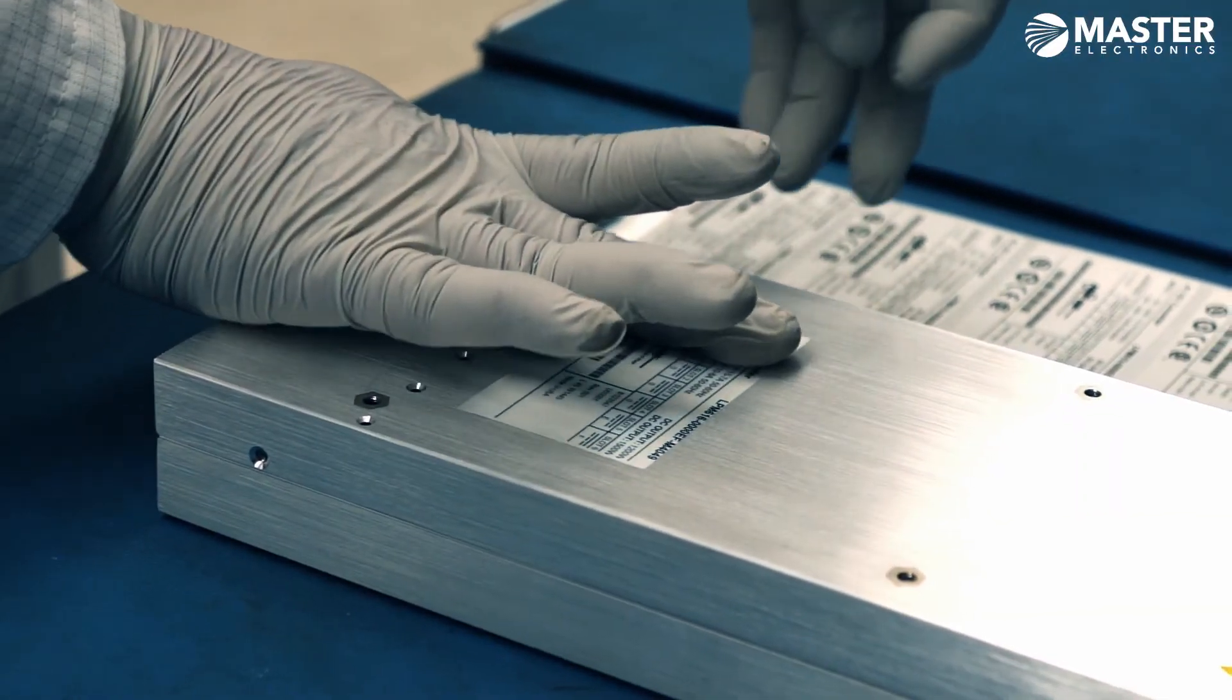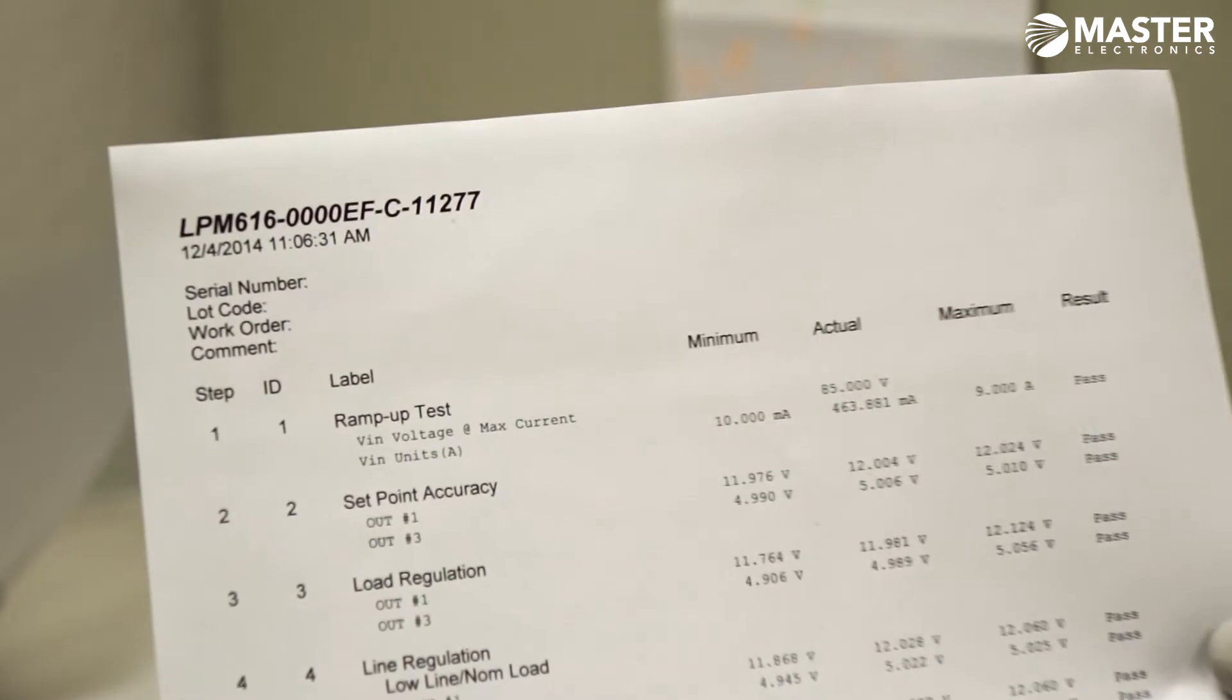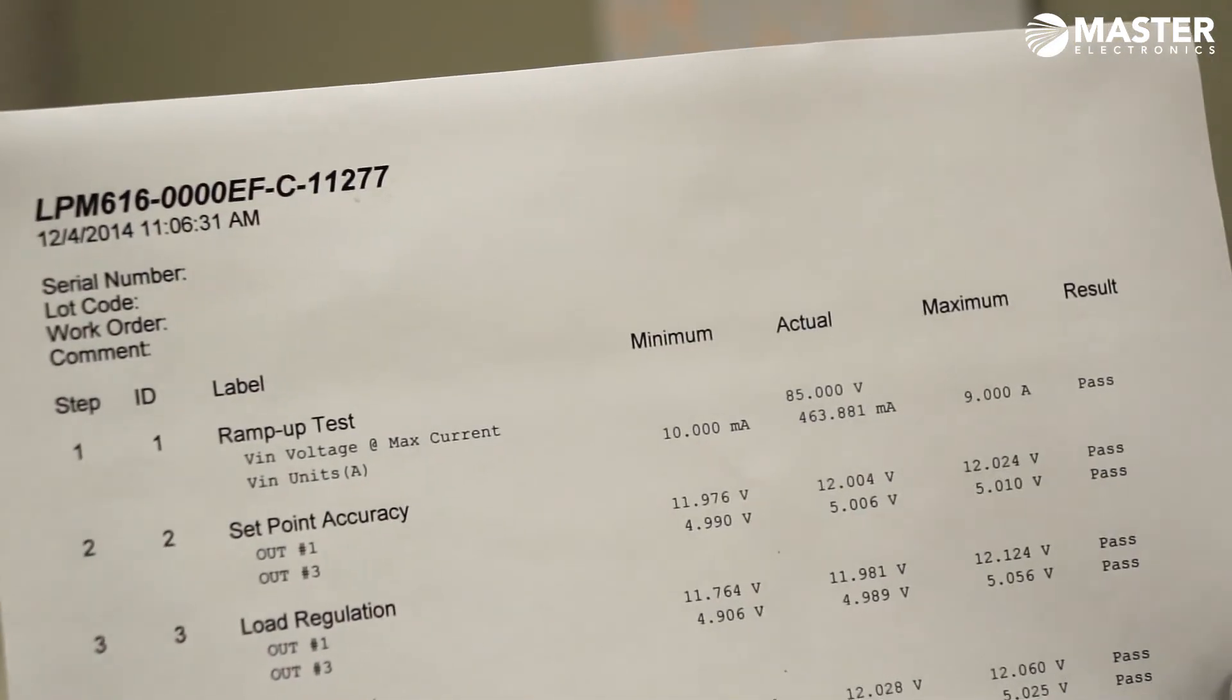After each unit passes, it gets a label and final visual inspection. A hard copy of the test results is retained with the work order and a copy is shipped out with the unit.